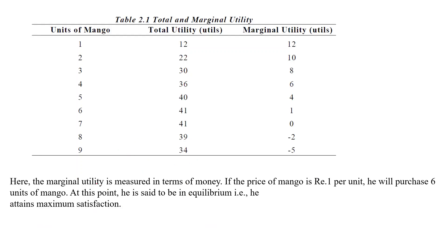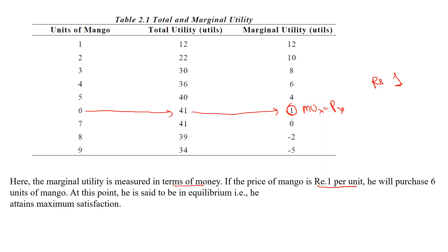In the previous example, suppose marginal utility is measured in terms of money and the price of mango is rupee 1 per unit. At the point where MU of X equals price of X, the consumer is in equilibrium. At 6 units of consumption, the consumer will be at equilibrium — he will purchase 6 units of mangoes and at this point is said to attain maximum satisfaction.